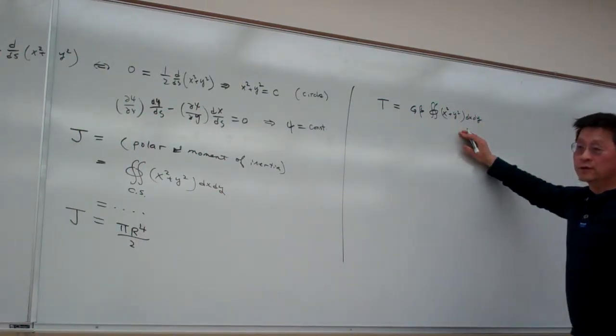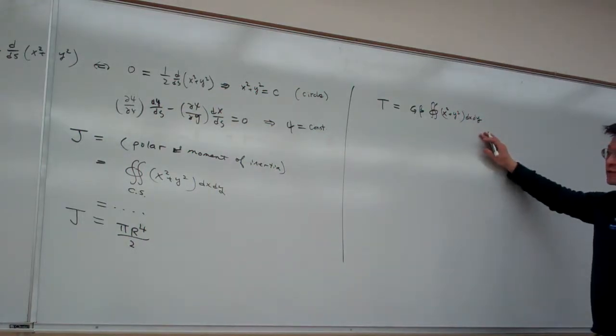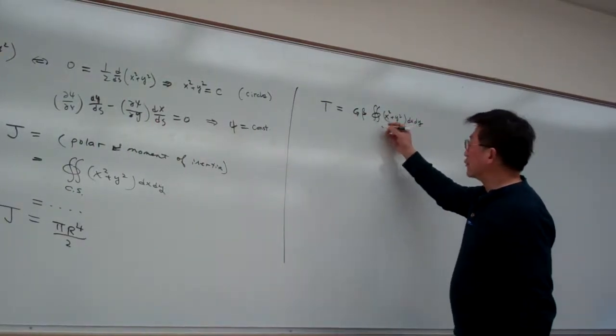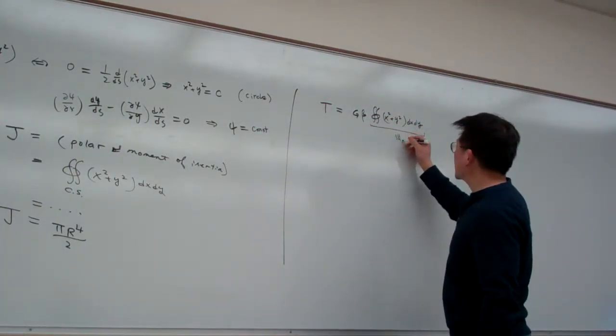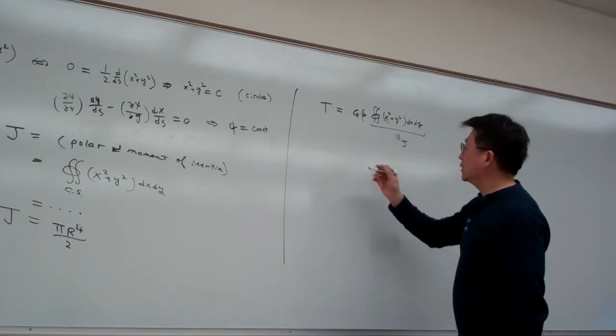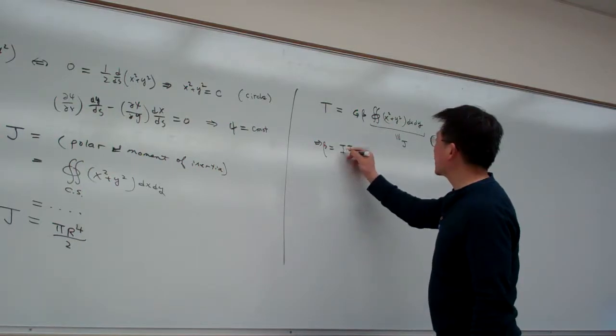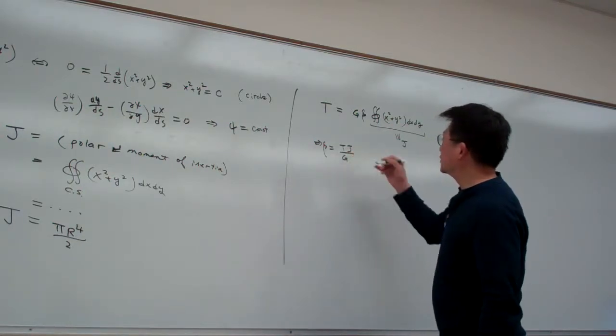Again, refer to the previous summaries of the equations and formulations for this section. We have this, and right now we've calculated the polar moment of inertia. From here we can determine beta equals T over GJ.